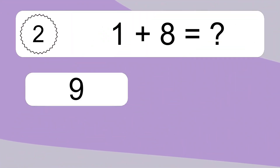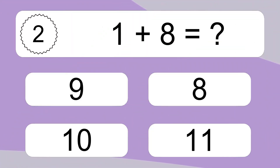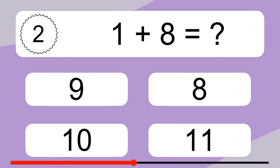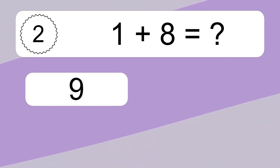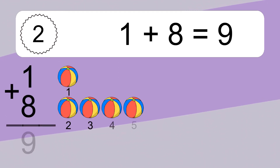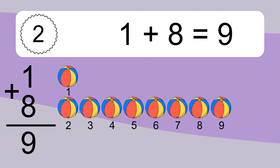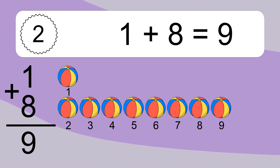1 plus 8 equals what? 1 plus 8 equals 9. Let's count it. 1, 2, 3, 4, 5, 6, 7, 8, 9.